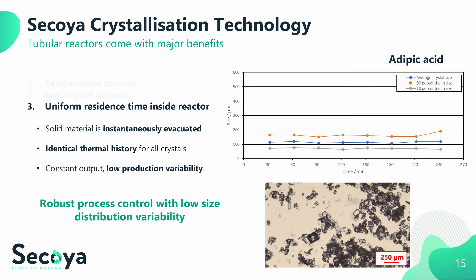Next to that, thanks to the use of short residence time inside the reactor, all material has undergone truly identical thermal history, which also hugely influences the time-based variation of product quality during a production. In this example, adipic acid crystallization is run for four hours in a row with nearly negligible variations in average crystal size and size distribution, indicated by the 10th and 90th percentile in size. Both stay at the same width for samples taken every 30 minutes during this run. Also during this operation time, no blockage was observed at the tube exit provoked by any large crystals retained inside the reactor or coagulated on the tube walls.